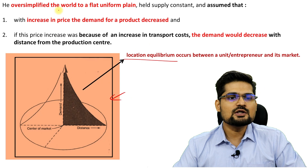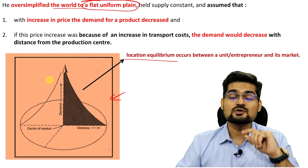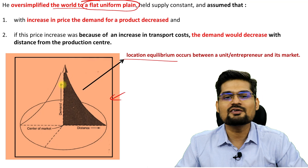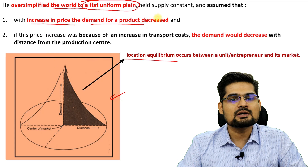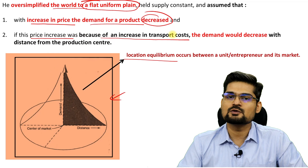Lösch oversimplified the world to a flat, uniform plane — which is also a point of criticism, since the world is not so flat and uniform in actual sense. With an increase in price, demand for a product decreases. And if this price increase is because of increased transport cost, the demand would decrease with distance from the production center.